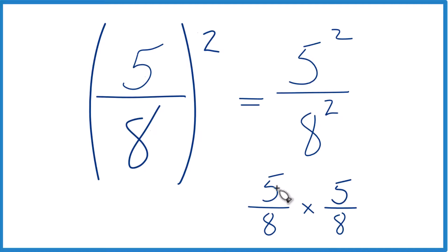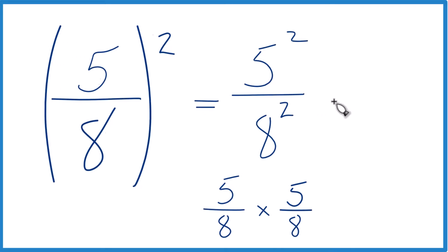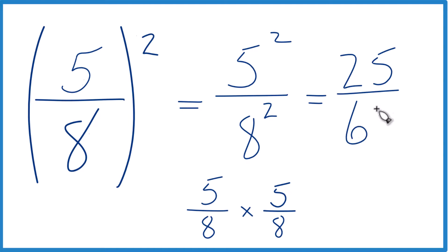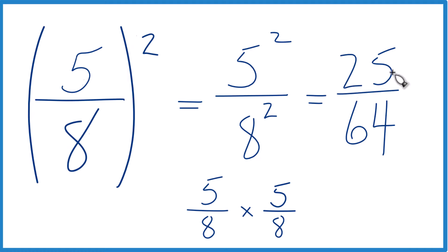Now we can just figure it out — do the math. 5 times 5 equals 25, and then 8 times 8 is 64. So 5 eighths squared, or 5 eighths to the second power, equals 25 over 64. That's it.